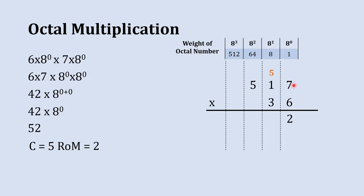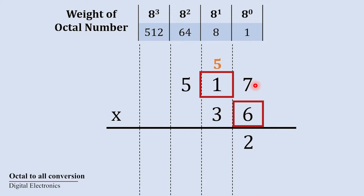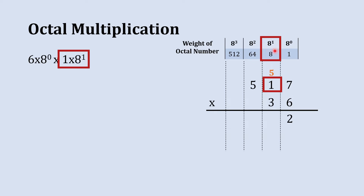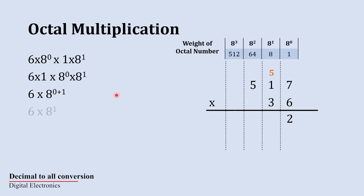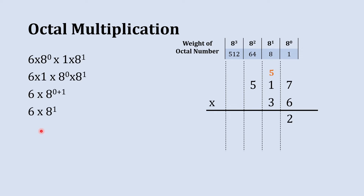The multiplication with the first digit is over, and now we will multiply this 6 with the next digit of the multiplicand. Here, 6 which has a weight of 8 raise to 0 gets multiplied with 1 which has a weight of 8 raise to 1. Their multiplication is 6 and the multiplication of their weights is 8 raise to 1. We have a carry, so 6 plus 5 gives us 11.